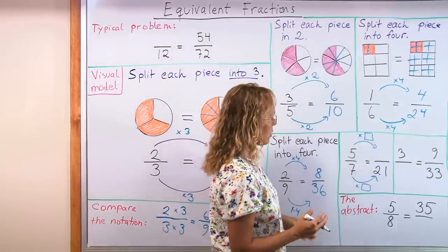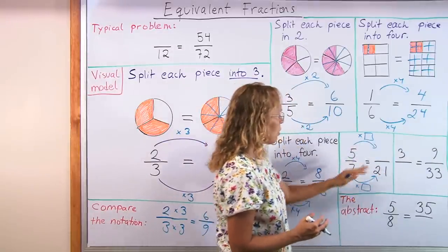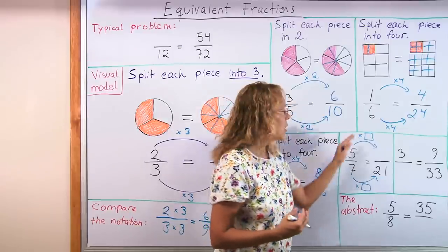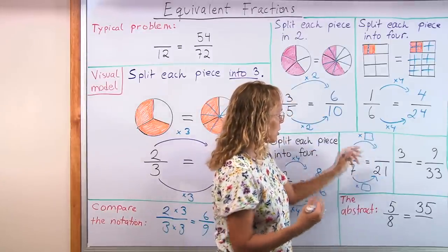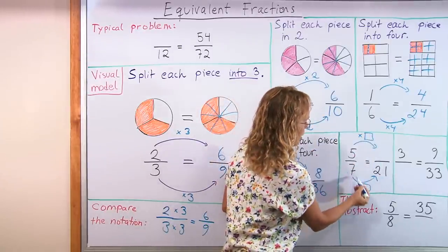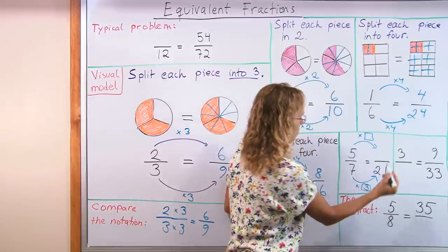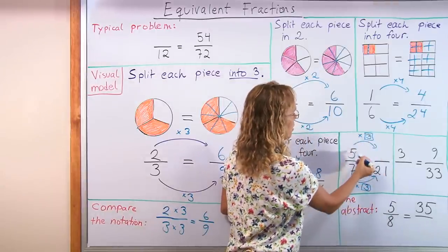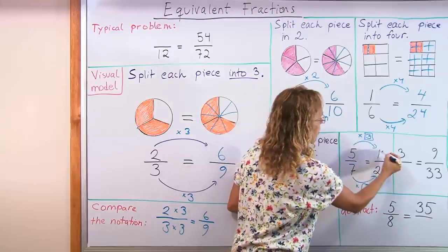The problem could look like this, or it can be just left as it was and then you instruct the students about the arrows and the little boxes and times. So they need to think 7 times what is 21 and the same number goes here and then 5 times 3 is 15.